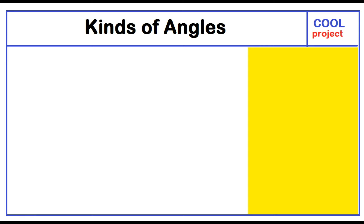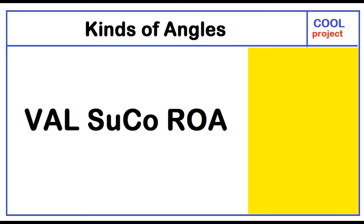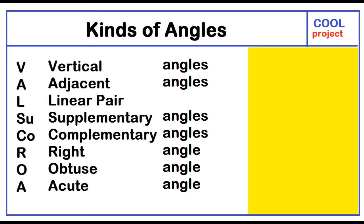Kinds of Angles. Remember this name: Val-Sokou-Roua. This is an acronym for vertical angles, adjacent angles, linear pair, supplementary angles, complementary angles, right angle, obtuse angle, and acute angle.